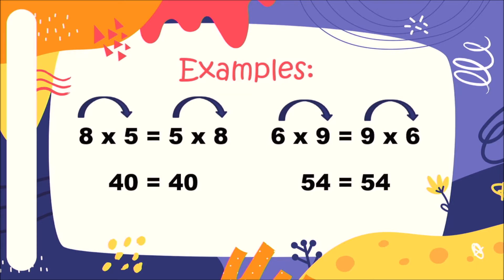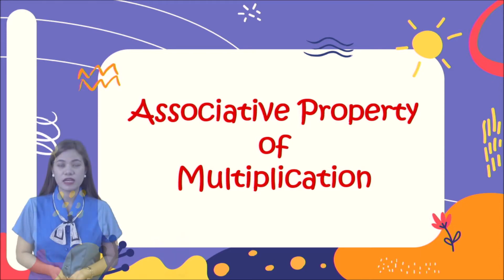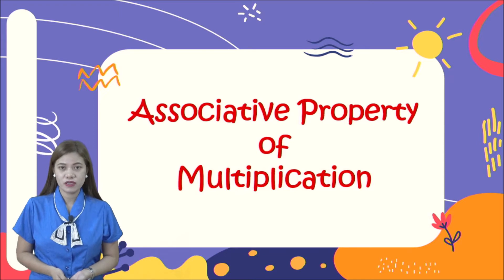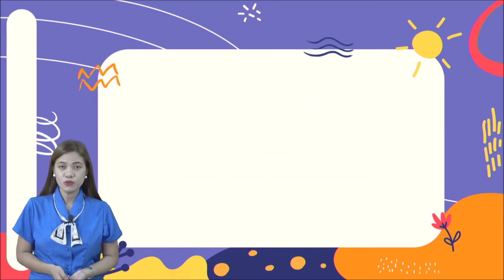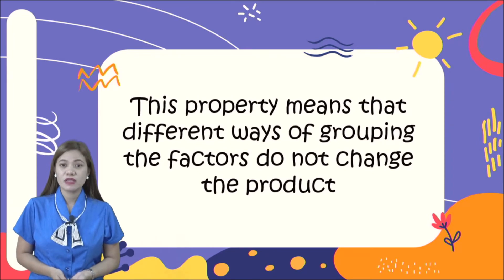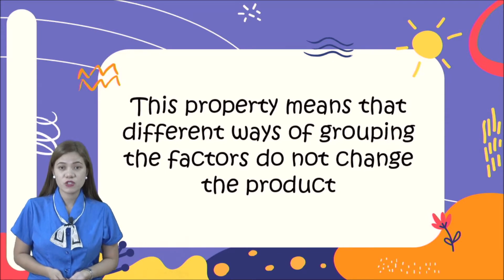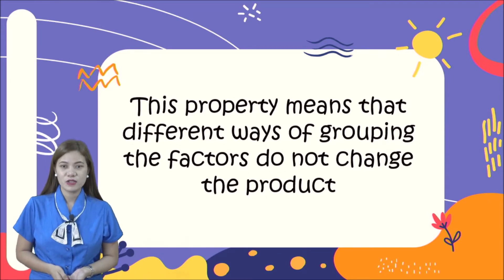The next property is called associative property of multiplication. This property means that different ways of grouping the factors do not change the product. Let us look at the examples.